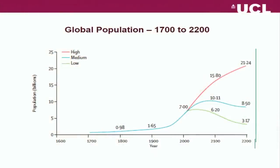The next slide shows how much the population has increased since the Industrial Revolution, and how much more it might increase in the future. At the beginning we've got a stable population, and then there's this huge increase in growth in the last century. We're just over 7 billion now, and it only took 12 years for the population to increase from 6 billion in 1998 to 7 billion in 2012.